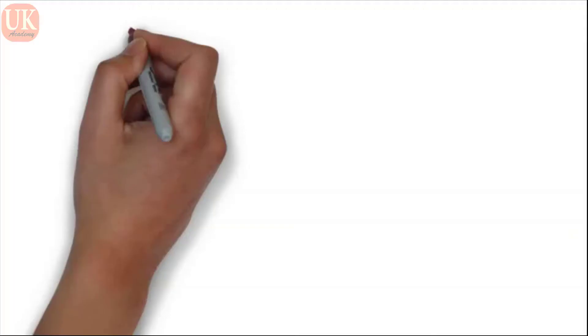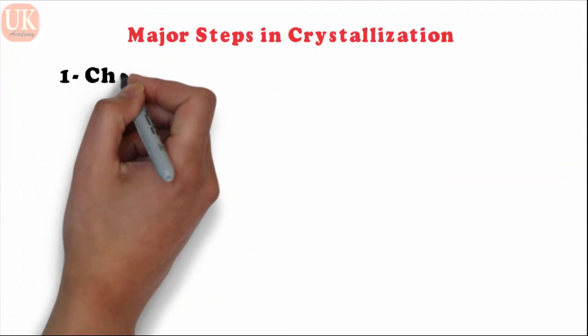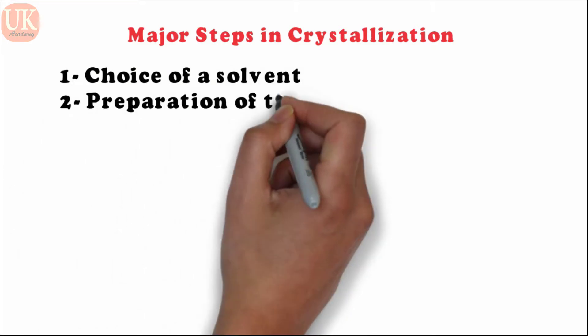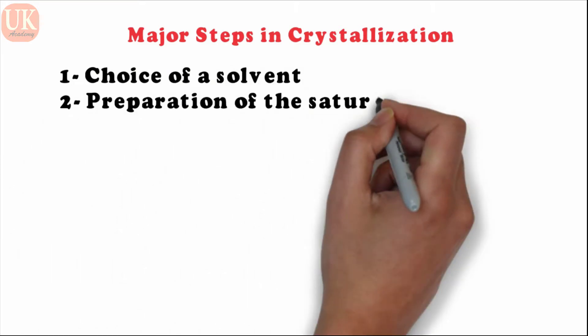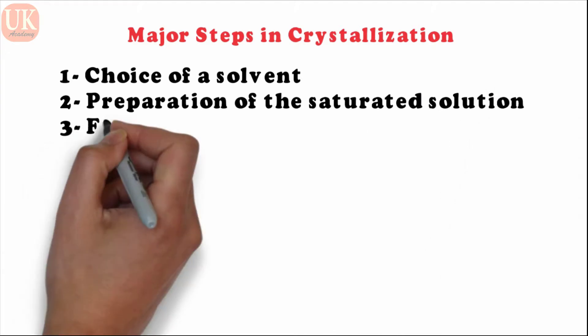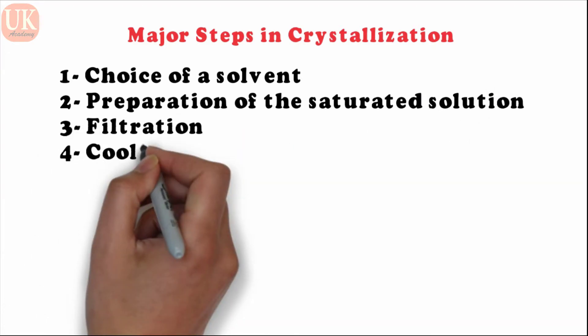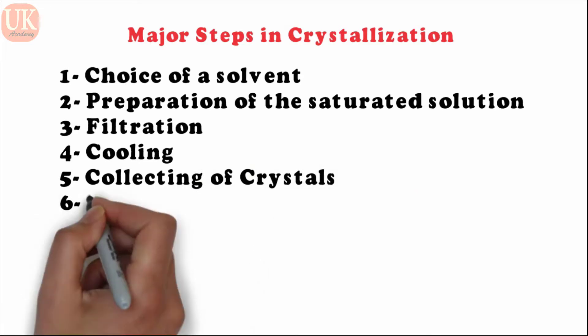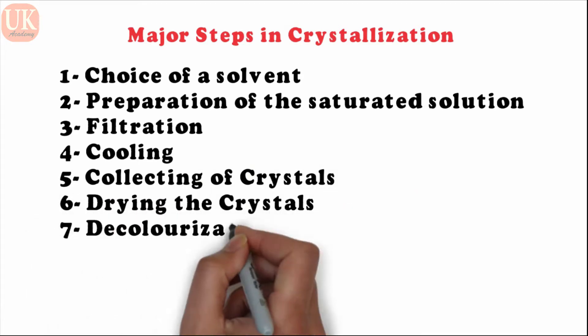If we look at crystallization in the big picture, there are many steps involved. The steps involved in crystallization are: Number 1 — Choice of solvent. Number 2 — Preparation of the saturated solution. Number 3 — Filtration. Number 4 — Cooling. Number 5 — Collecting the crystals. Number 6 — Drying the crystals. Number 7 — Decolorizing of undesirable colors.